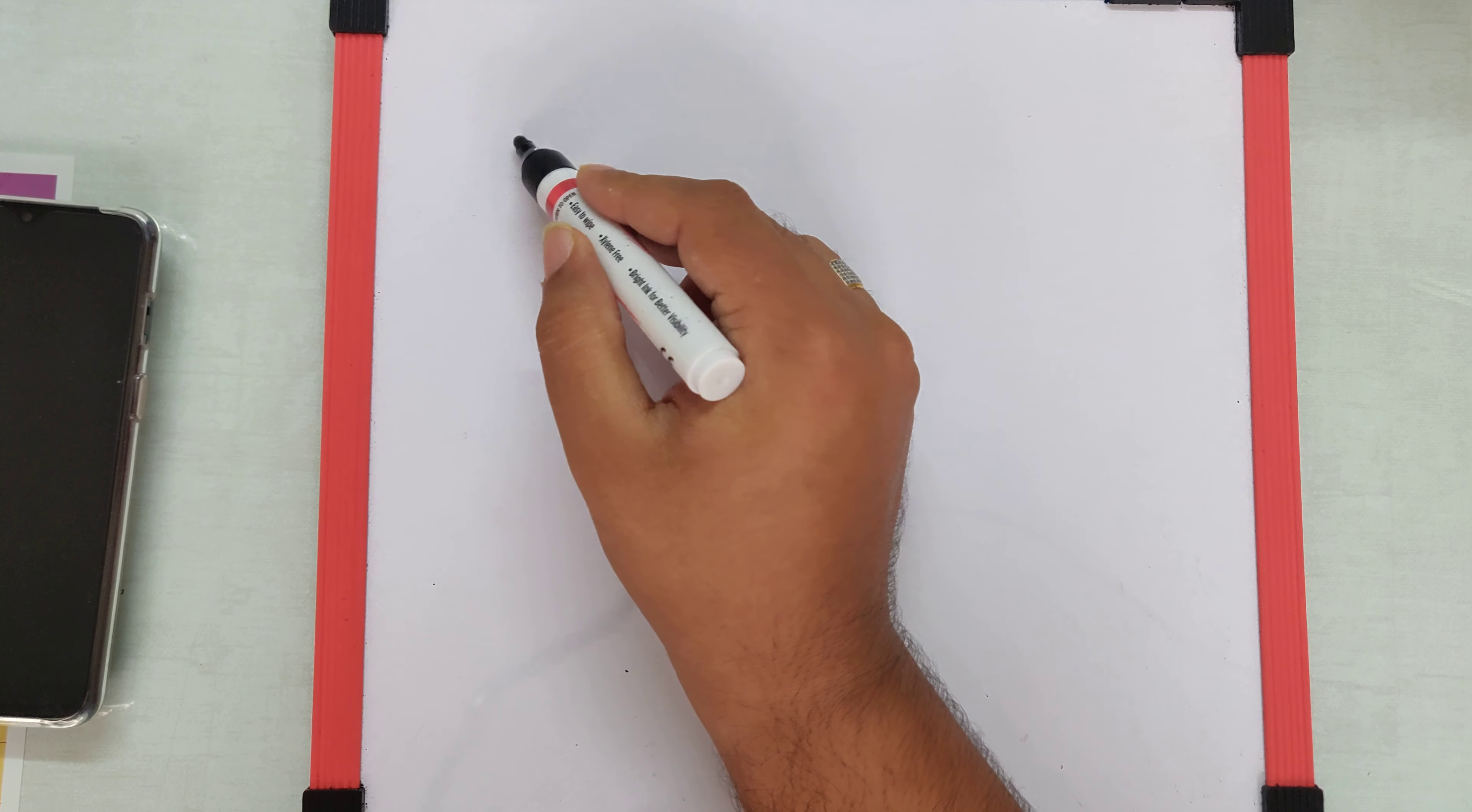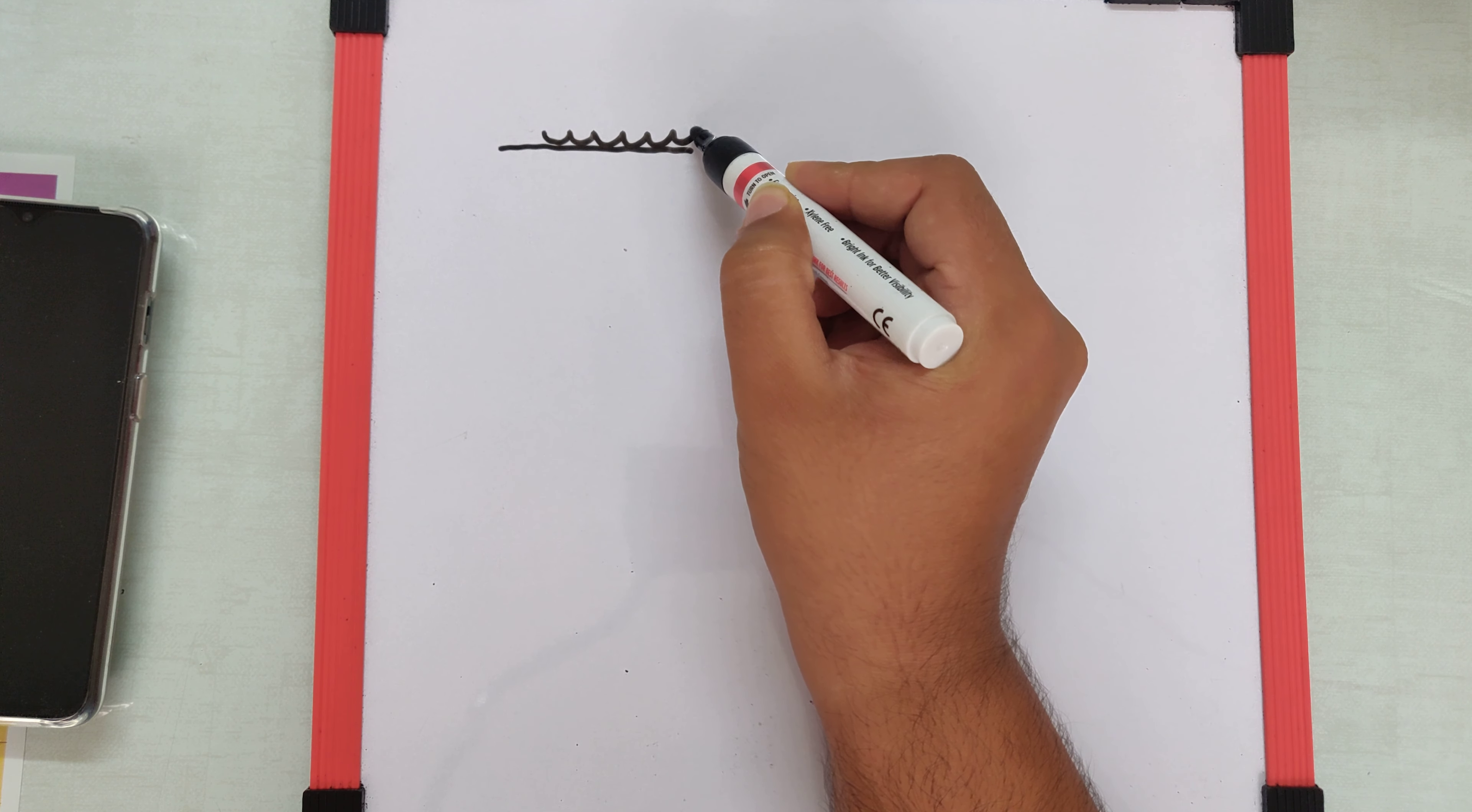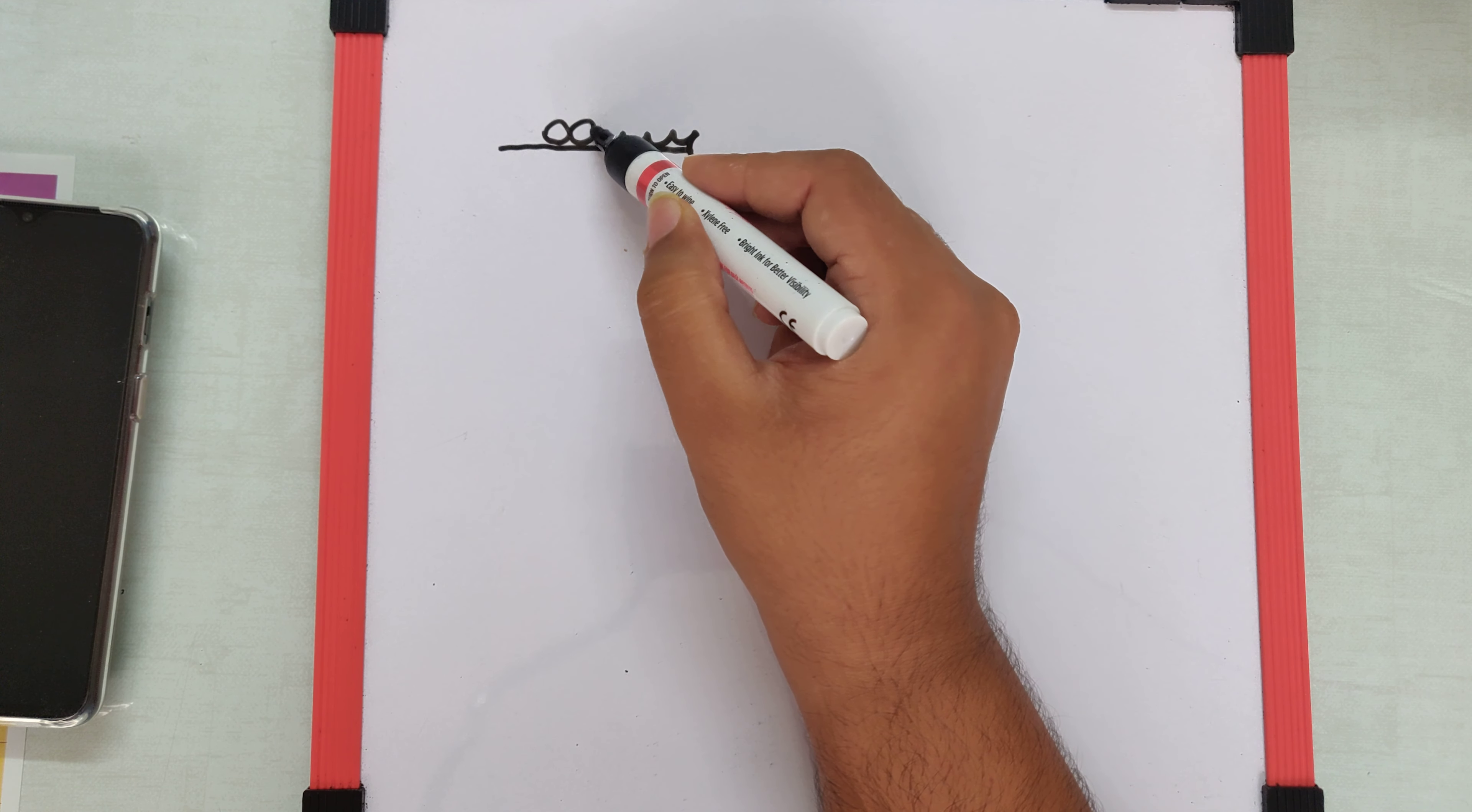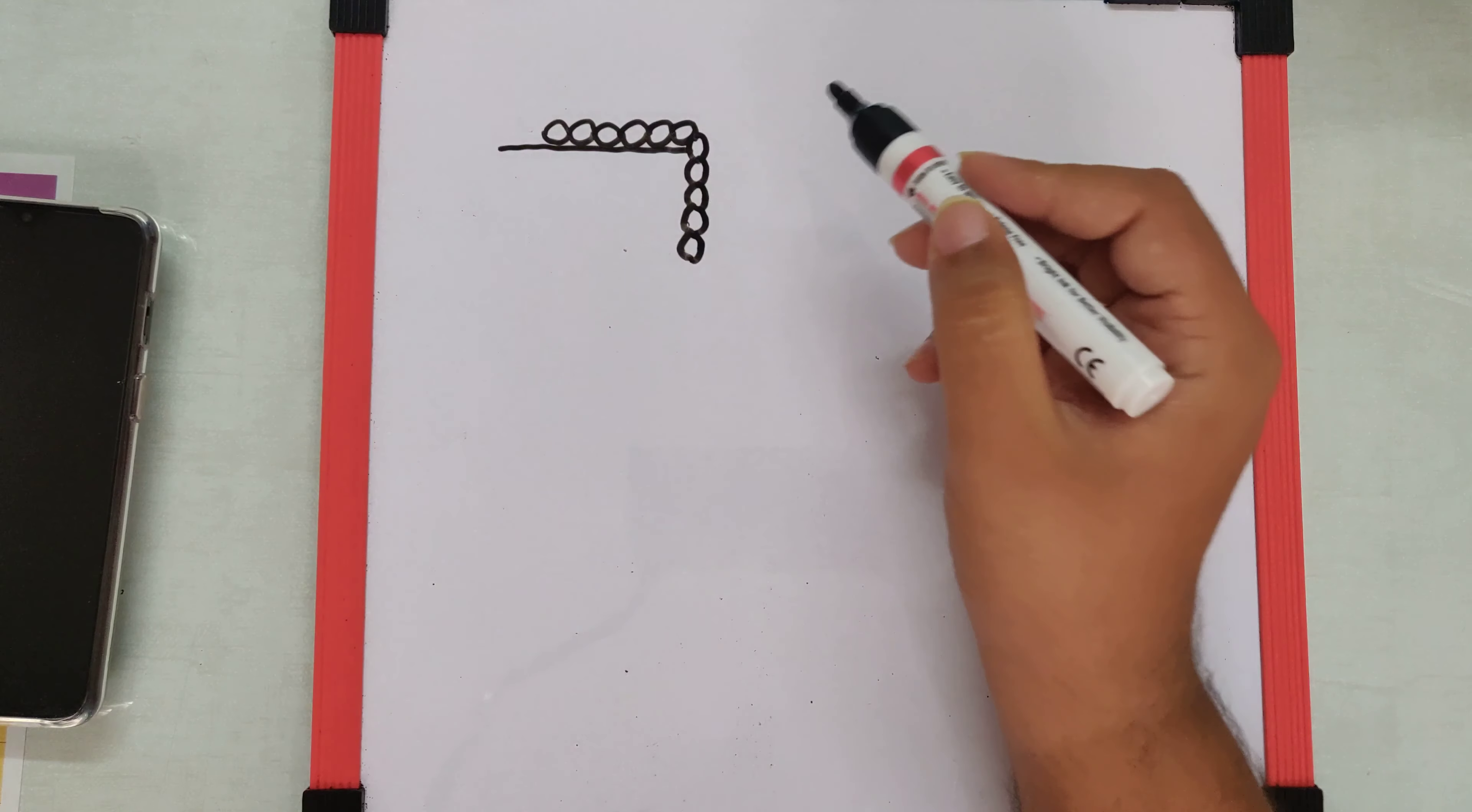What we need to understand is that there is a table on which some part of the chain is lying and some part is hanging over the edge of the table.